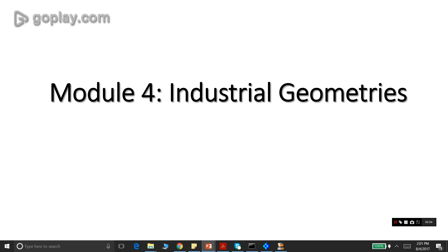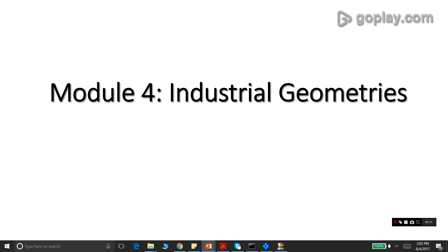We are in module 4, which tackles industrial geometries. By industrial geometries I mean geometries used in the industry, which are much more complex than the simplified geometries tackled in this course so far. This module is the most sophisticated part of the course and will incorporate all concepts learned so far, while also introducing advanced concepts like collapse blocks, merge blocks, and most importantly copy or rotate blocks.